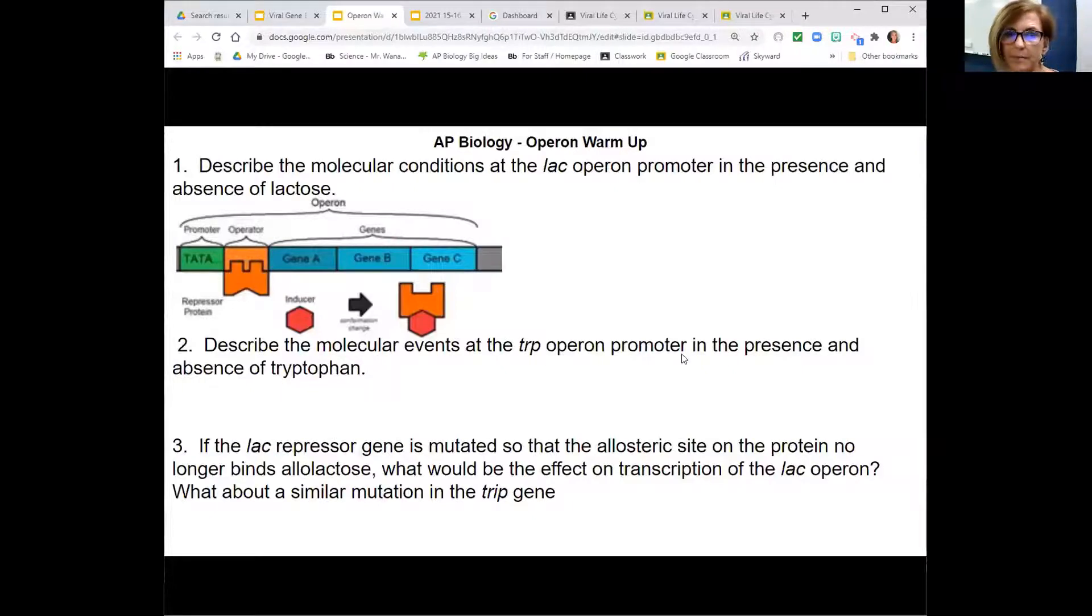The trp operon will be the opposite. If tryptophan is present, tryptophan will act as a co-repressor binding the regulatory protein. The regulatory protein will bind the operator. So in the presence of tryptophan, the repressor protein is bound to the operator and polymerase cannot pass through. In the absence of tryptophan, the repressor protein is released and polymerase can transcribe.